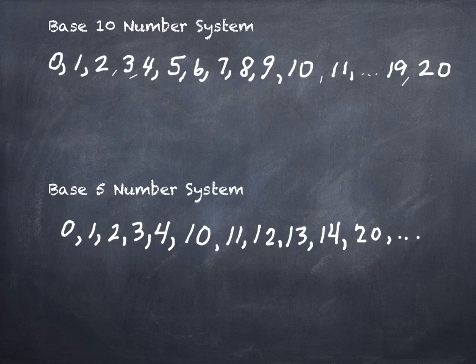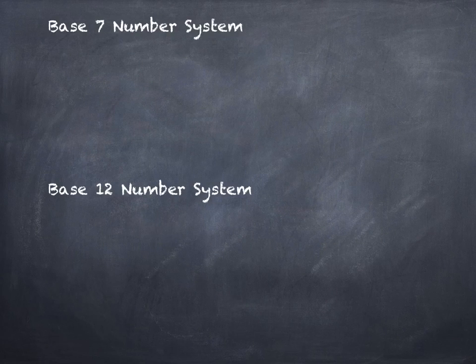What is our biggest two-digit number in our system? 99 — two nines, the two largest numerals. What would be the largest two-digit numeral in base 5? Four-four, because four is the largest numeral and you write it twice. We'll talk more about base 5 later.